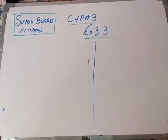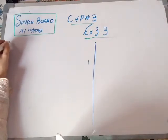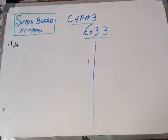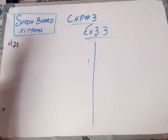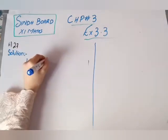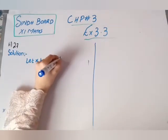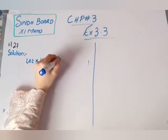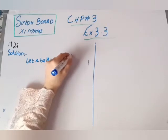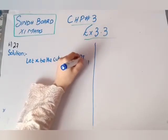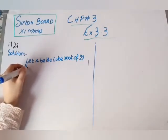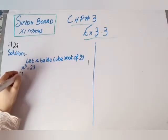Assalamu alaikum and a very good morning. Let's continue with question number one, part two. We will let x be the cube root of 27, which means x is the cube root of 27. So here we have x cube equals to 27.